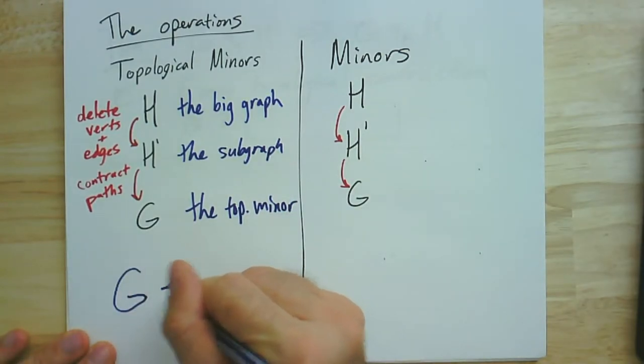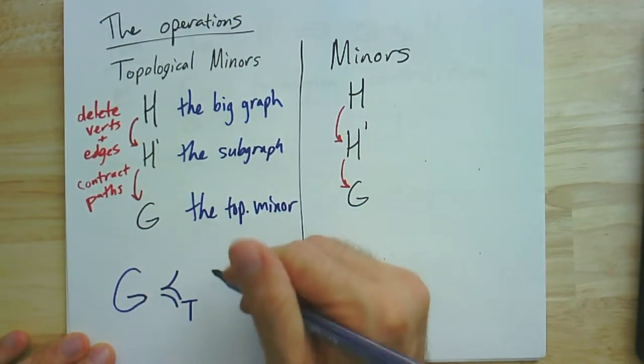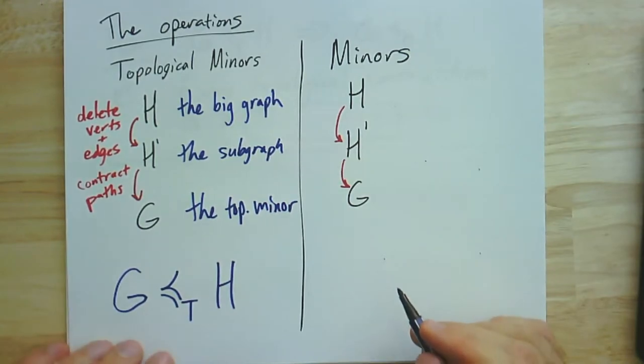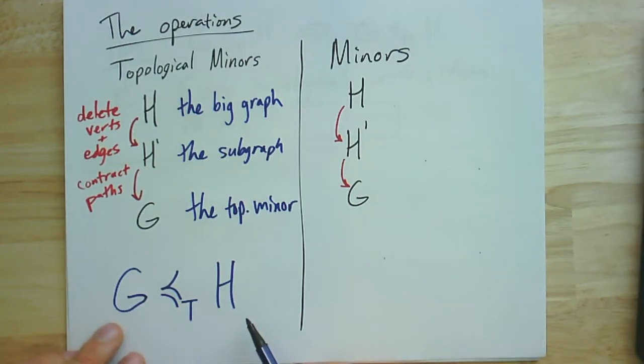So in the end, we get down to the topological minor. And we're going to express this in notation as follows, it's this kind of curly less than symbol. It's often used for partial orders. Like this. And we would enunciate this sentence, we would pronounce it as G is a topological minor of H.